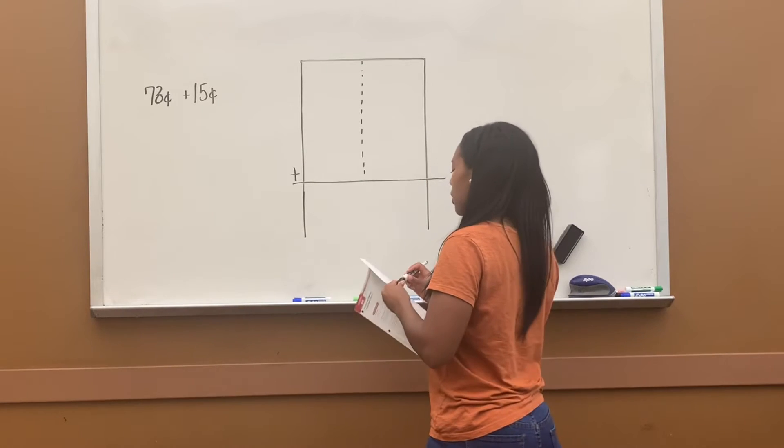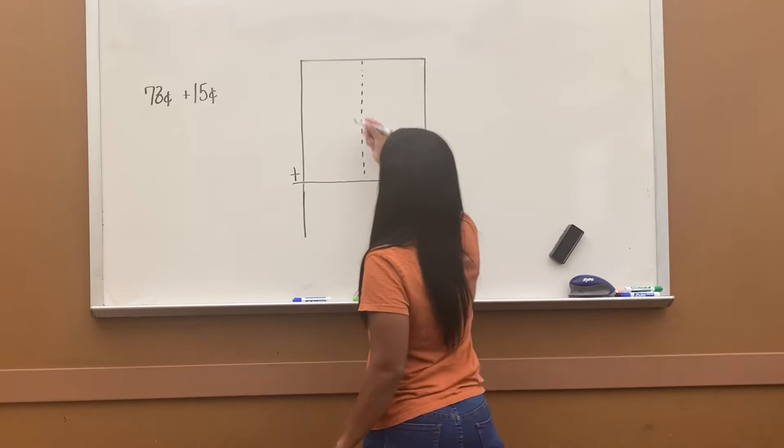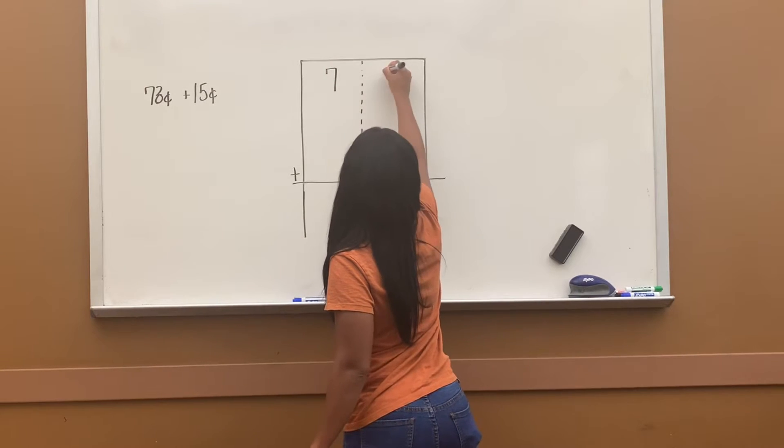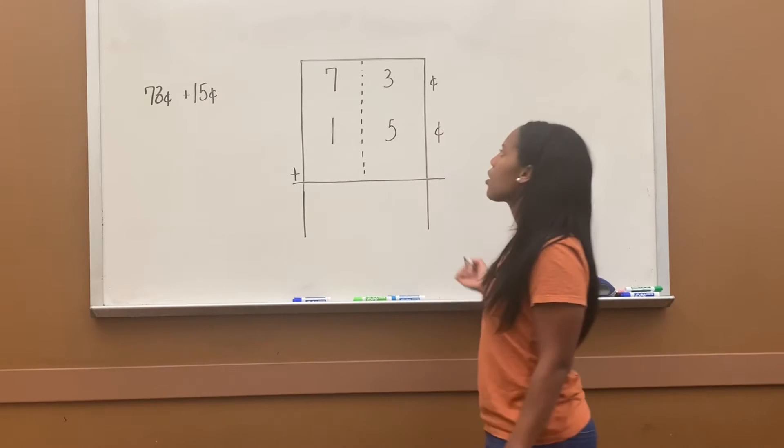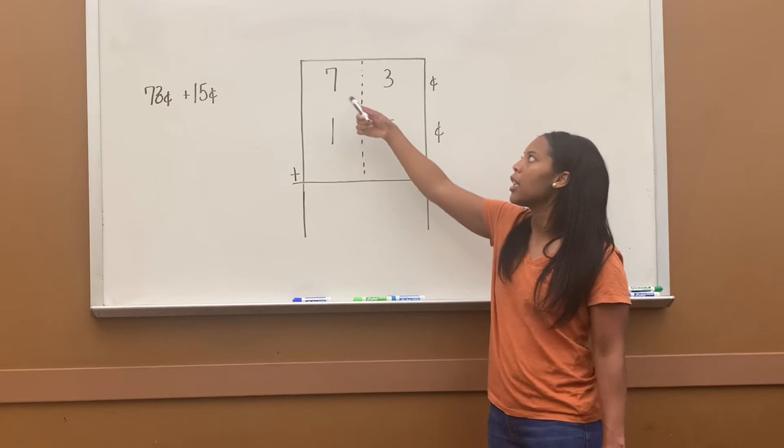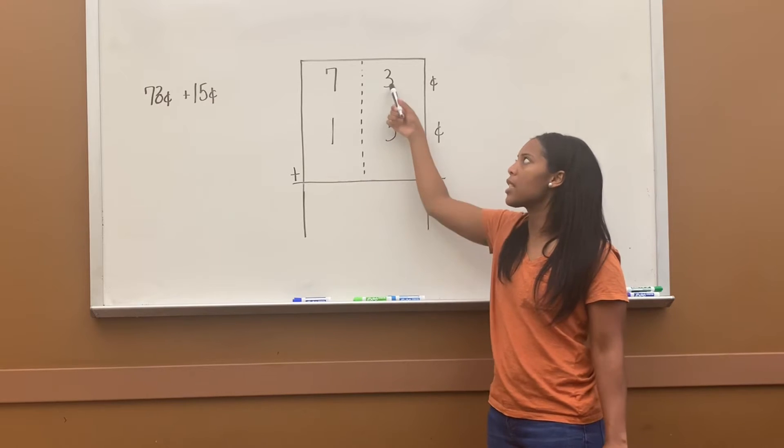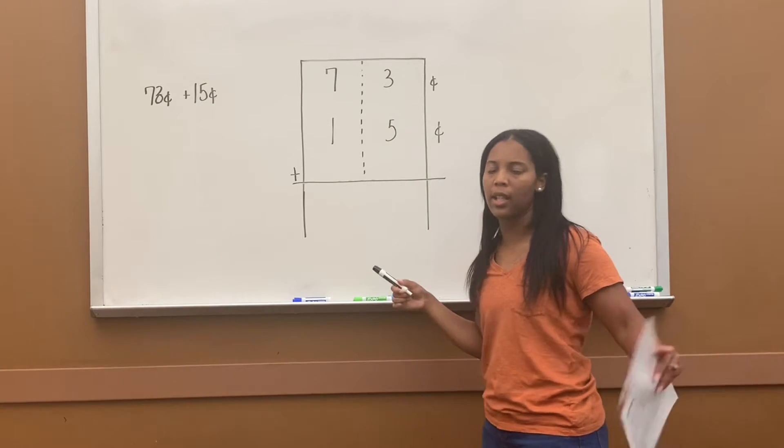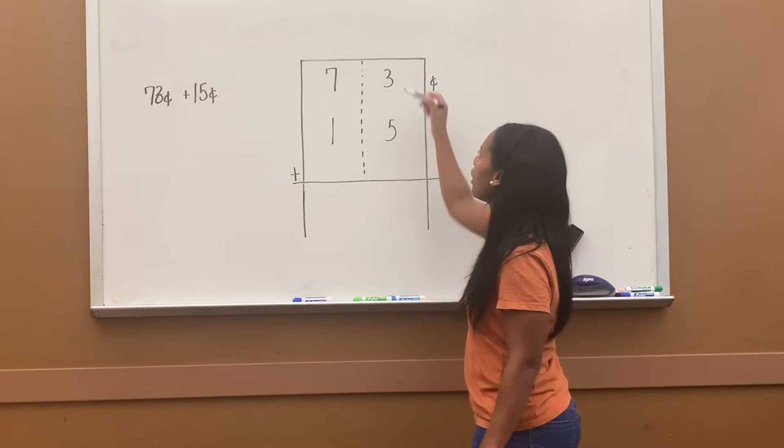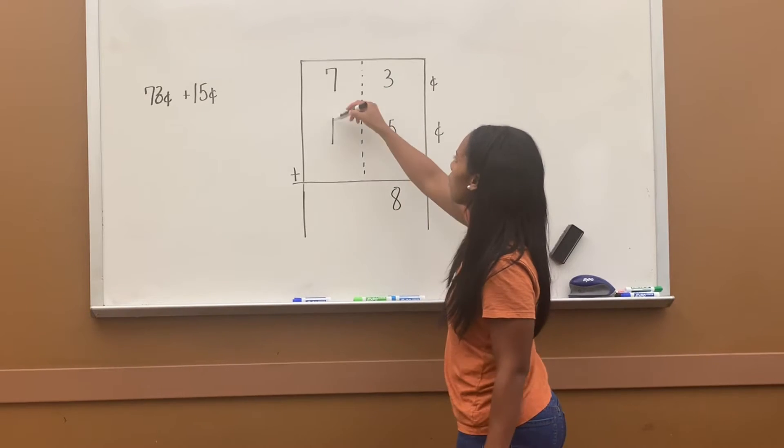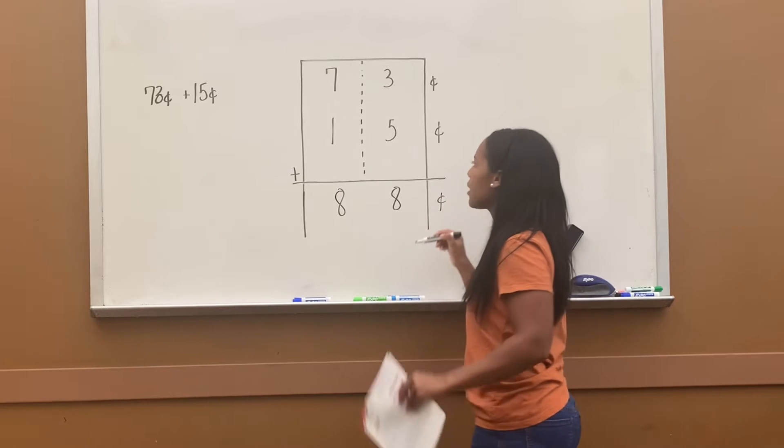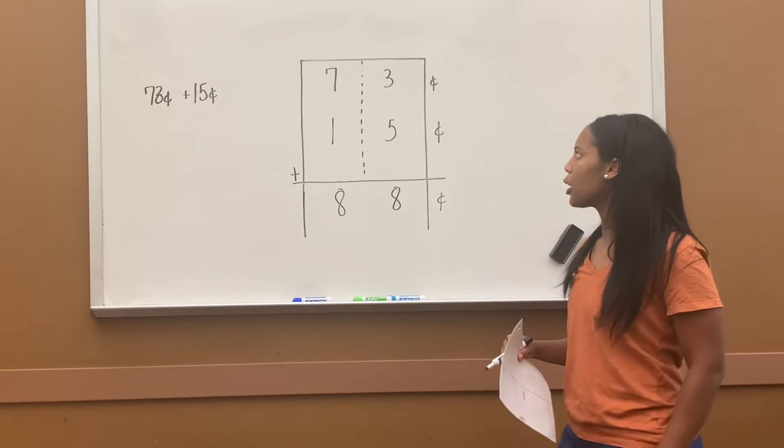So 73 cents plus 15 cents, we're going to set it up. I have 73 cents plus the 15 cents. All I'm doing is putting it now in the tens, ones, tens, ones, and putting them one on top of the other, just like how we add. So now we can add it. 3 plus 5 equals 8, so we don't need to carry. 7 plus 1 equals 8. My answer is 88 cents. So that's for number 1. This one did not carry.